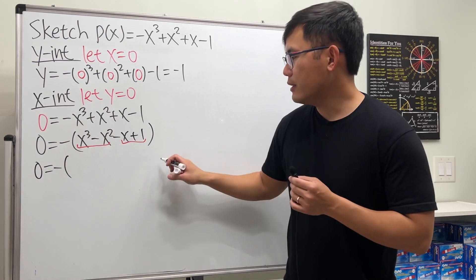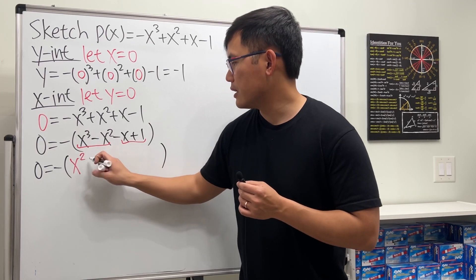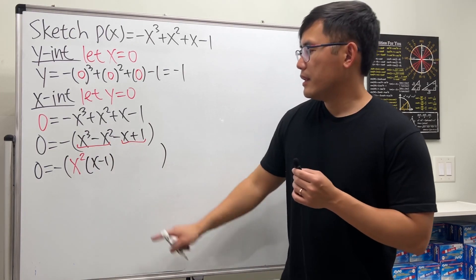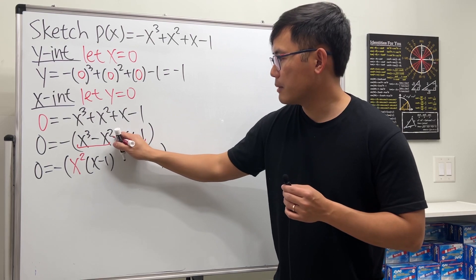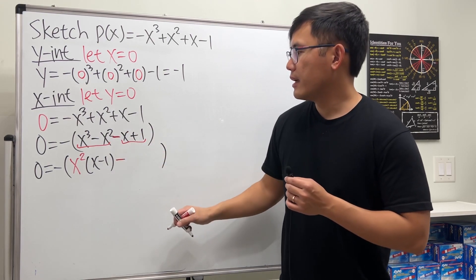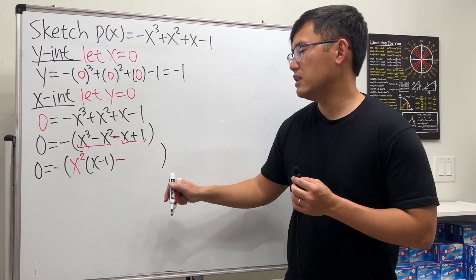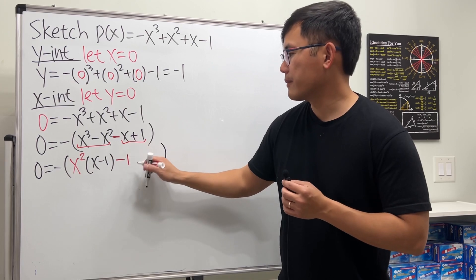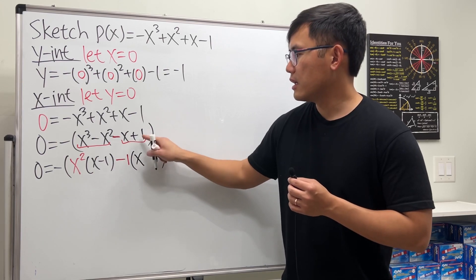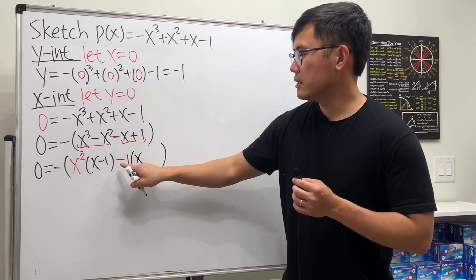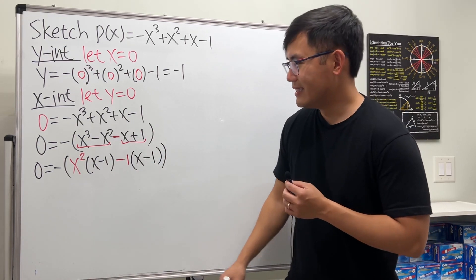For the first two terms we can factor out x², giving us x²(x - 1). Next, for the last two terms, we maintain the minus sign in the middle and factor out negative one. So originally negative x becomes just x inside, and positive one becomes minus one, giving us -1(x - 1). These two factors match — very nice.